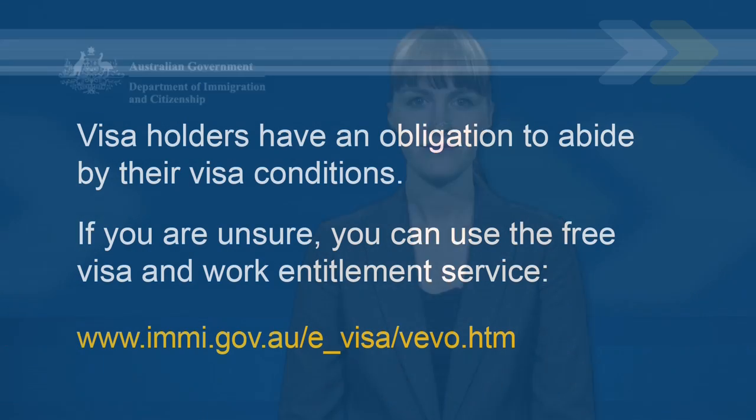You too have immigration obligations when working in Australia. Your main responsibility as an overseas worker is to ensure you have a valid Australian visa with work rights, and that you comply fully with the work conditions of your visa. Temporary visas that have work rights include the working holiday maker visas, student visas and the temporary 457 visa. If you are unsure of your work and visa entitlements, please visit our website to use the free visa and work entitlement service, also called Vivo.